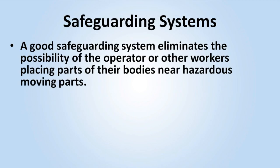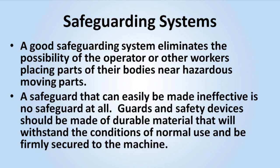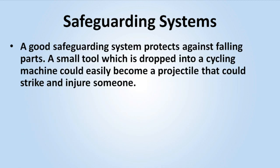A good safeguarding system eliminates the possibility of the operator or other workers placing parts of their bodies near hazardous moving parts. A safeguard that can easily be made ineffective is no safeguard at all. Guards and safety devices should be made of durable material that will withstand the conditions of normal use and be firmly secured to the machine. A good safeguarding system protects against falling parts. A small tool which is dropped into a cycling machine could easily become a projectile that could strike and injure someone.